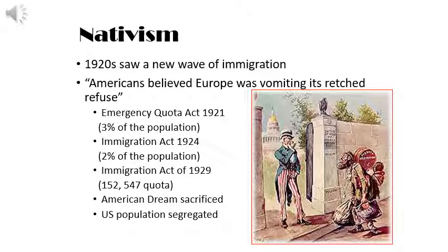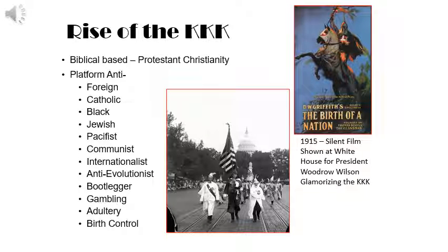Policy changes followed: the Emergency Quota Act of 1921 limited immigration to only 3% of the U.S. population; the Immigration Act of 1924 further limited the influx to 2% of the population; and the Immigration Act of 1929 put a strict cap at just over 150,000 total immigrants allowed. Throughout each of these acts, the American dream was sacrificed and the U.S. population was increasingly segregated between immigrants and nativists.